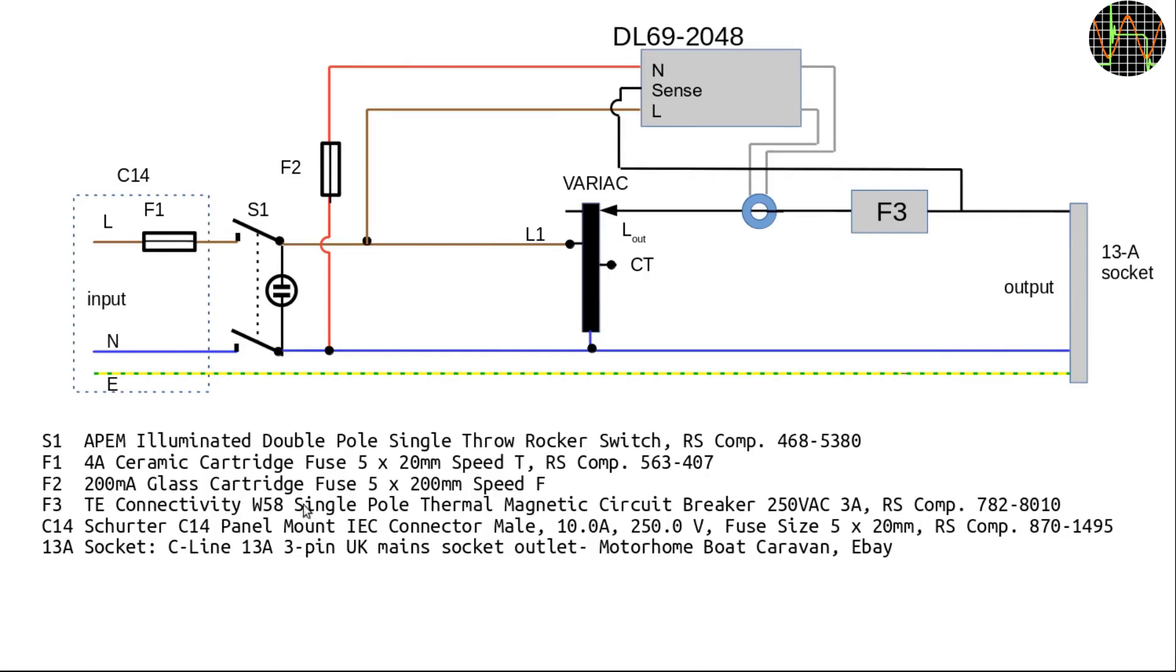The fuse F3 is actually a resettable thermal magnetic circuit breaker rated for 3A. That is less than what the transformer can handle but the breaker needs a bit of an overload to even respond. My idea is that this resettable circuit breaker is the main device to protect the expensive VARIAC from permanent damage but as a last resort, there is the additional slow 4A fuse in the input.